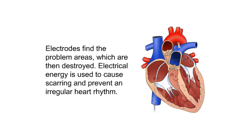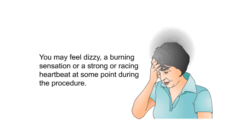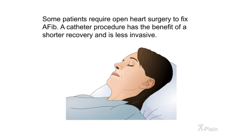Electrodes find the problem areas, which are then destroyed. Electrical energy is used to cause scarring and prevent an irregular heart rhythm. The procedure takes a few hours, and a health care provider carefully monitors your heart throughout. You may feel dizzy, a burning sensation, or a strong or racing heartbeat at some point during the procedure. Some patients require open heart surgery to fix AFib; a catheter procedure has the benefit of a shorter recovery and is less invasive.